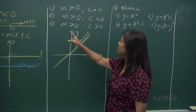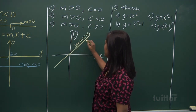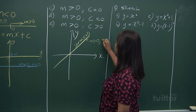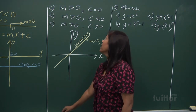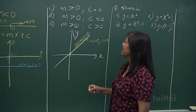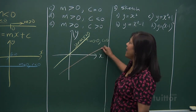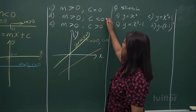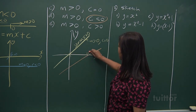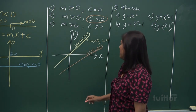So that is the condition where c equals 0: it's a positive gradient through the origin. Now, what happens if you have m greater than 0 and c less than 0? It means the gradient is positive, but c is less than 0 — the y-intercept is below the origin. So this is m greater than 0, c less than 0.